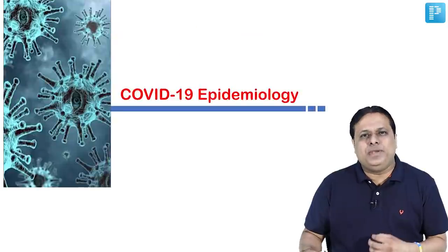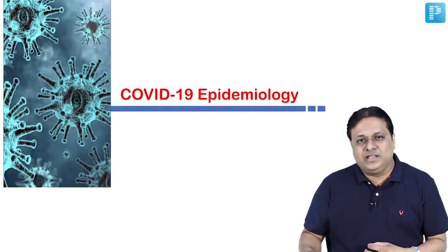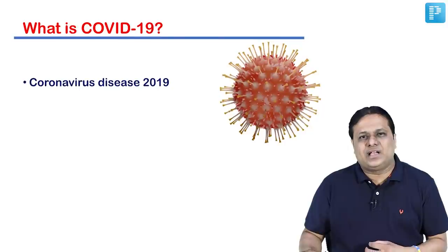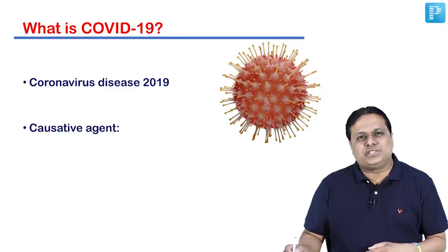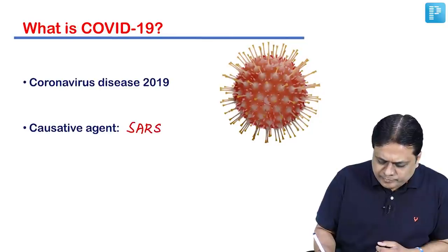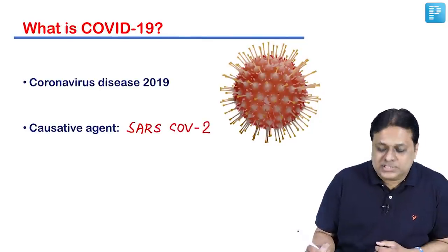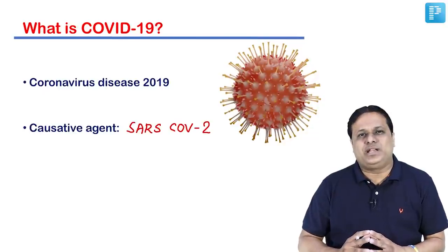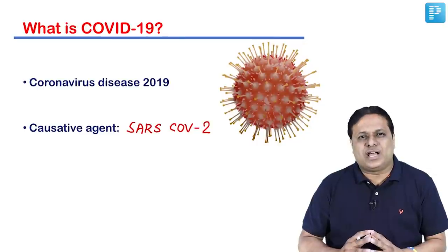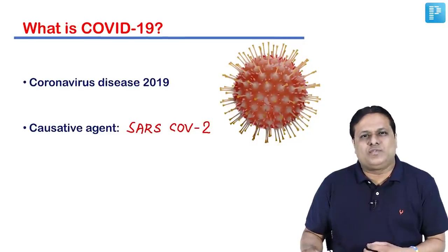Let us first start with the epidemiology of COVID-19 disease. COVID-19 is a short form of coronavirus disease 2019, and its causative agent is SARS-CoV-2 — severe acute respiratory syndrome coronavirus 2. The disease was first found in China in 2002 caused by SARS-CoV, and now its second form, SARS-CoV-2, is the causative agent of this new global pandemic, COVID-19.